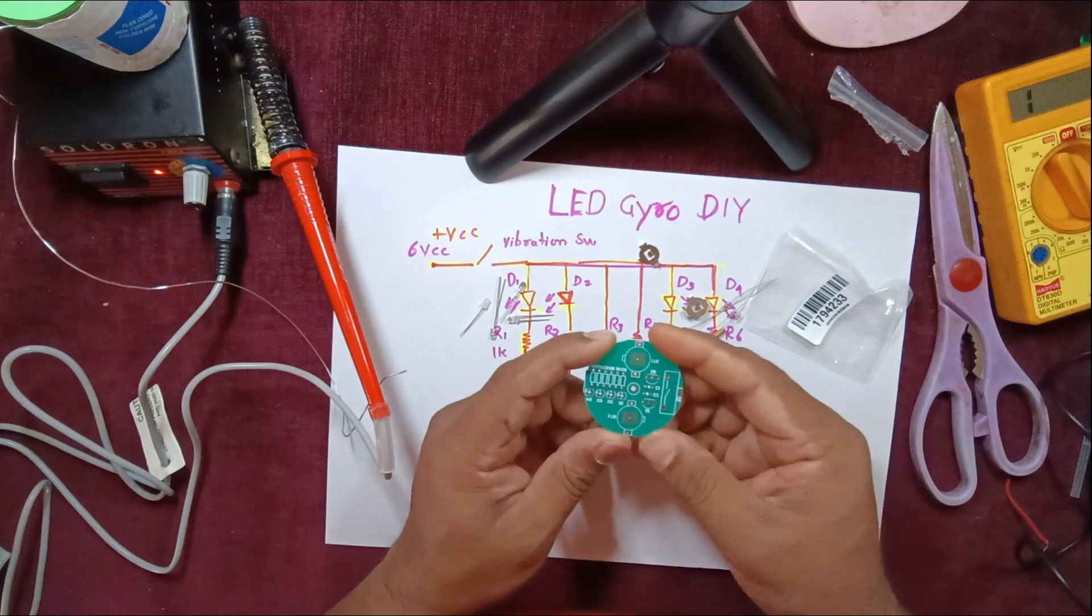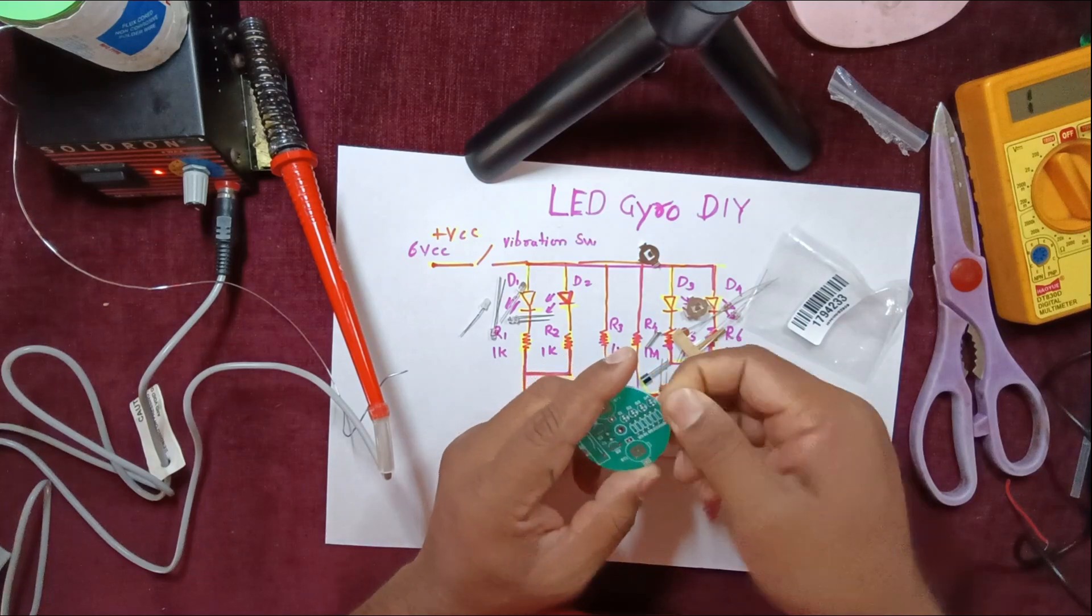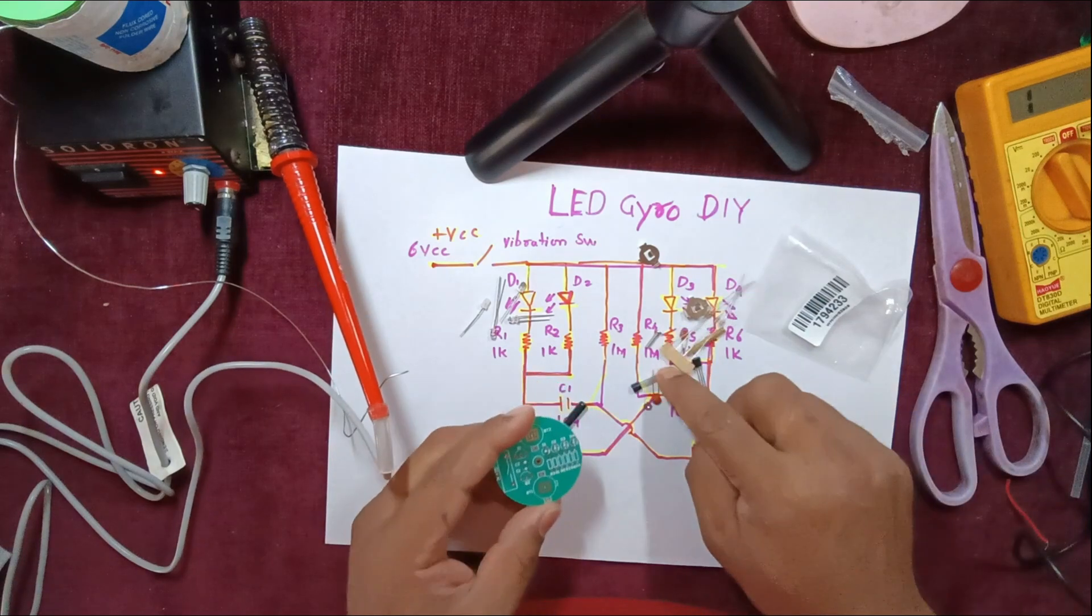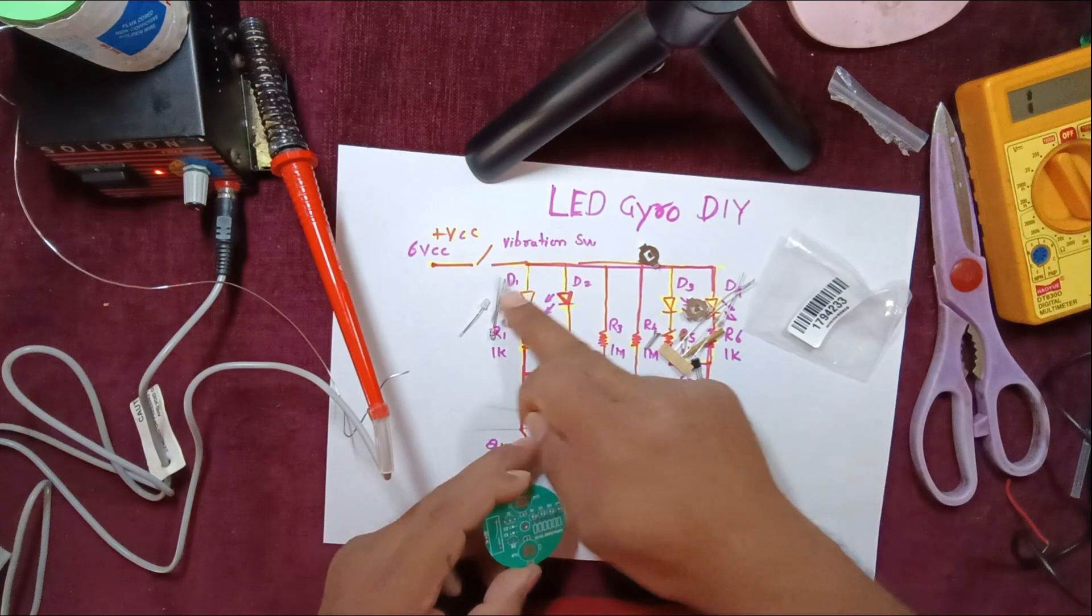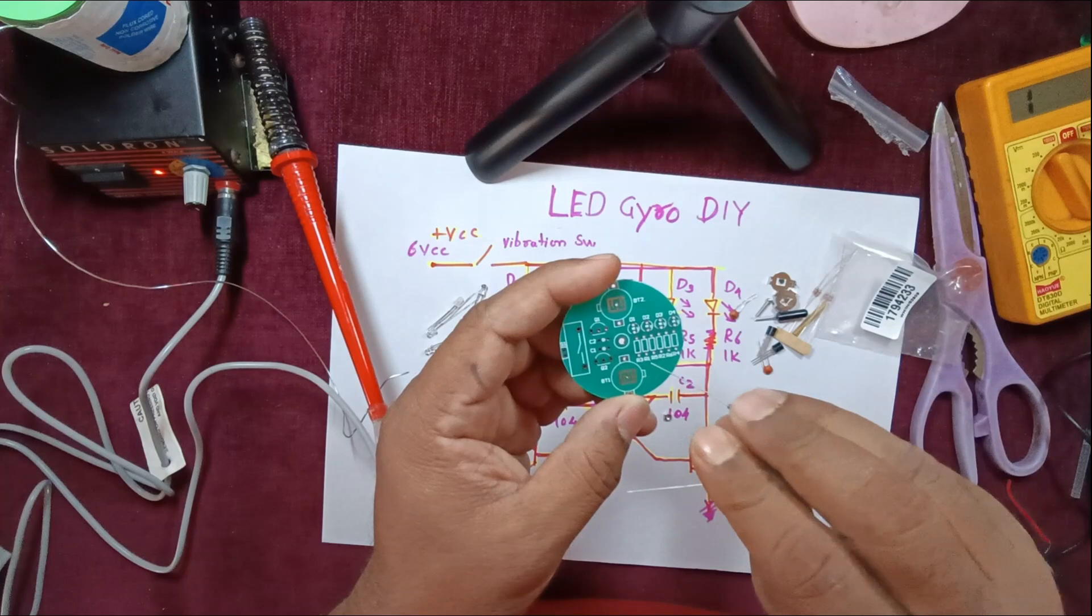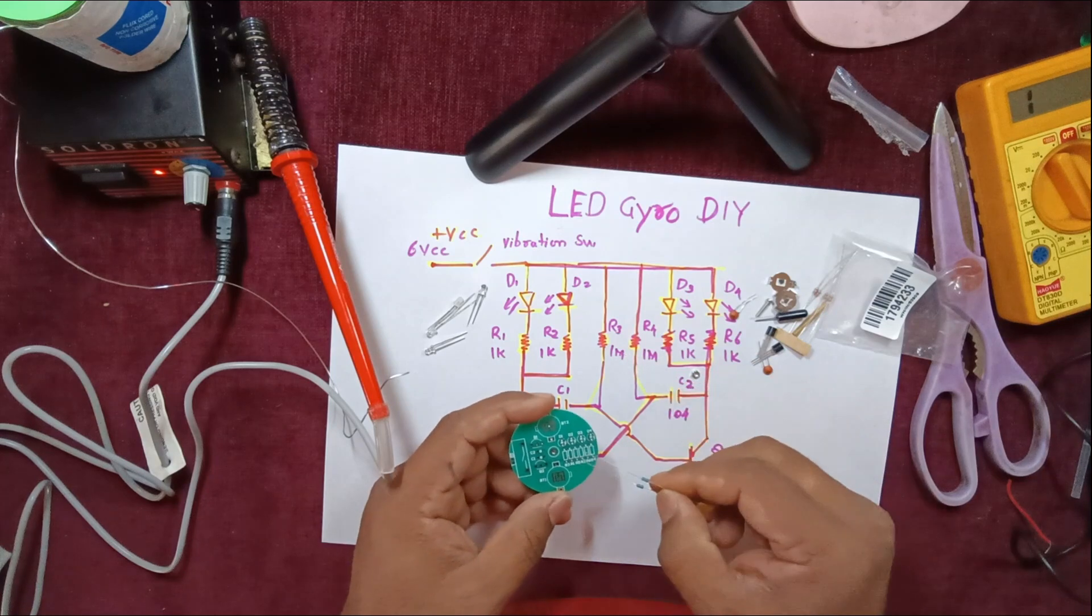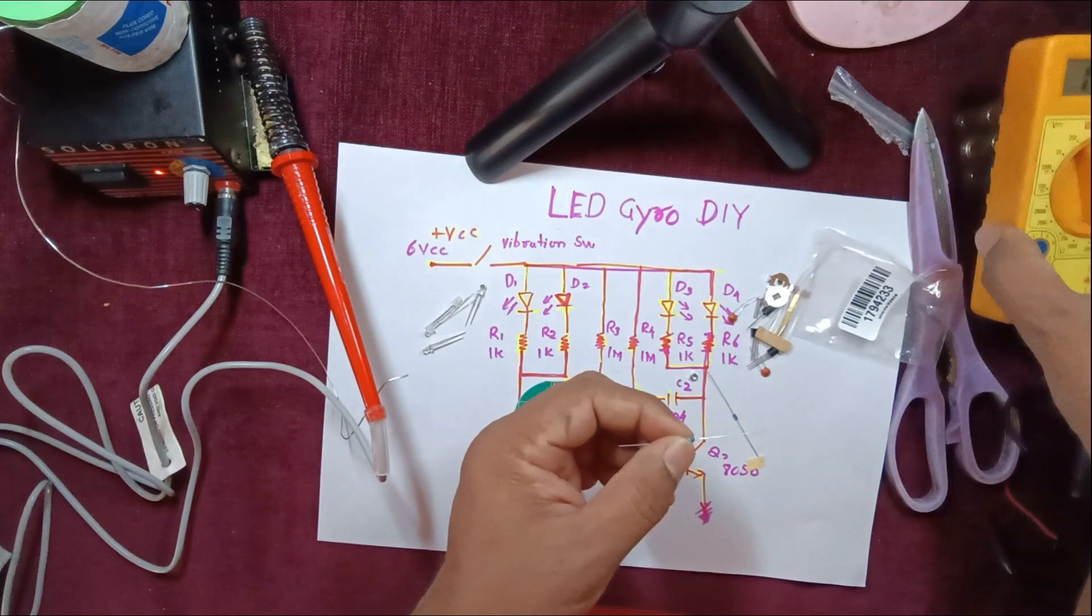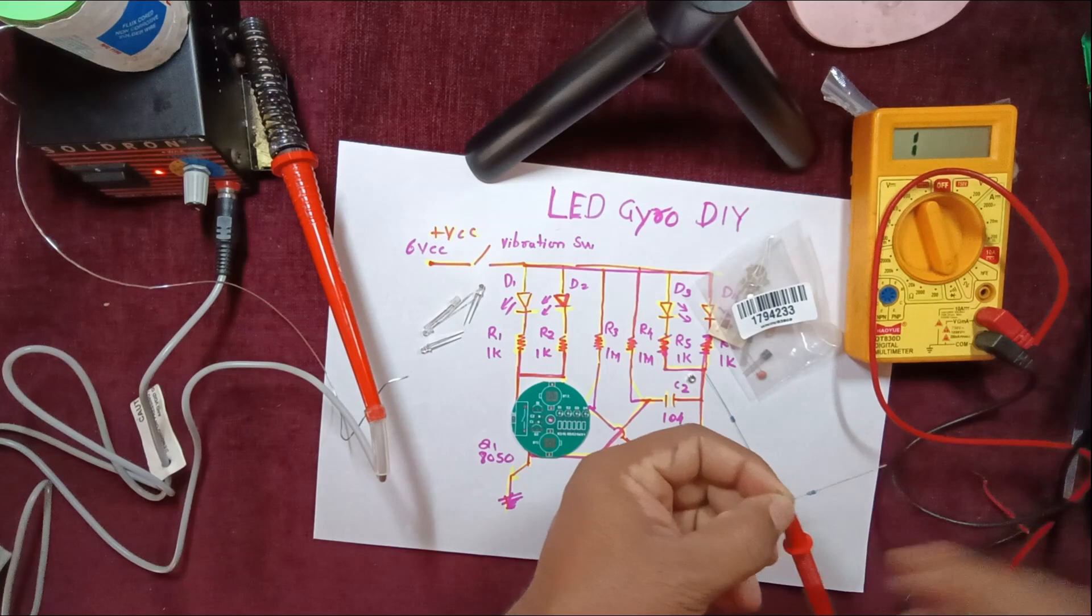As I have already told you, the rule of soldering is the smallest component should be placed first and then followed by the bigger components. The smallest component here is a resistor. On the DIY kit you can see R1, R3, each and everything is given. R3 is a one megaohm resistor. If you have got a doubt and are unable to guess the proper color code, you can use a multimeter. Let me check this.